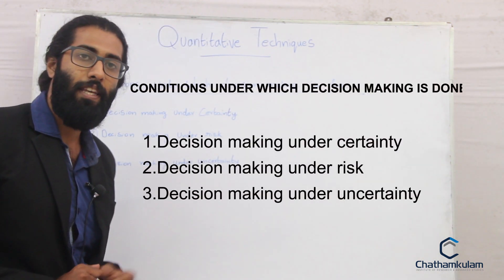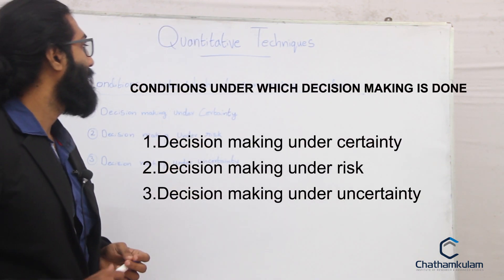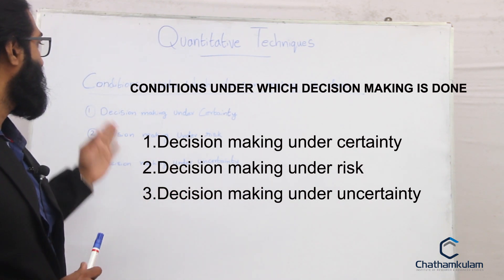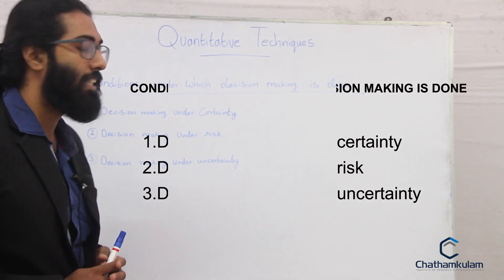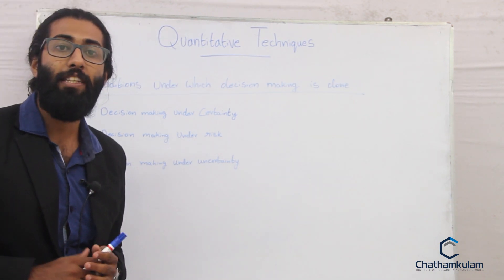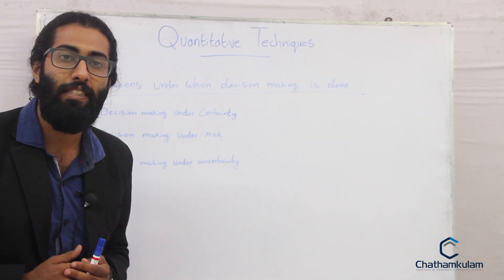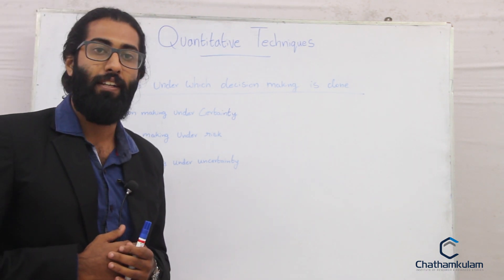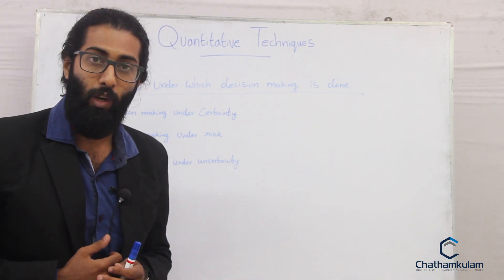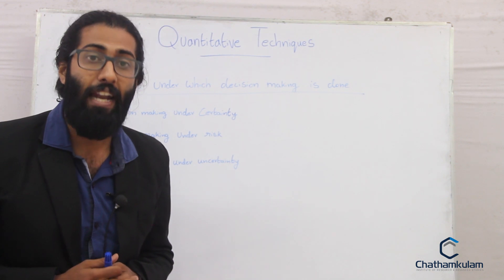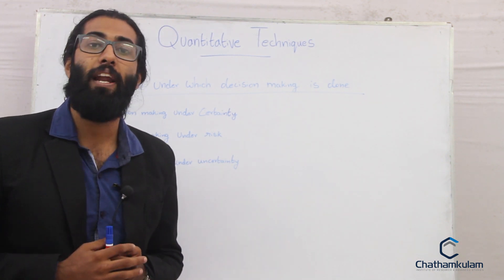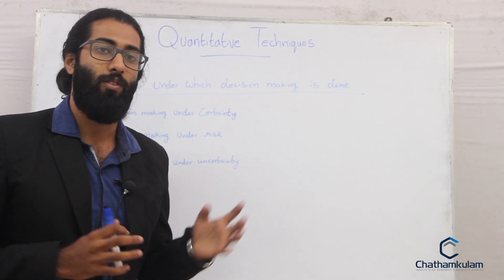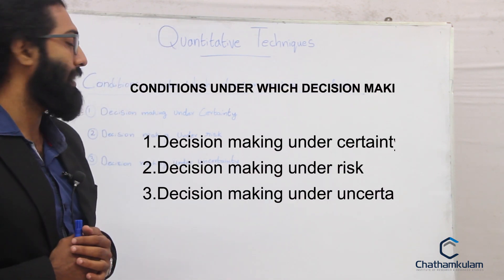Next we will see the conditions under which decision making is done. The first condition is decision making under certainty, where the manager makes the most accurate decisions as he is aware of the outcome of every action beforehand. This is one of the most desirable and ideal conditions, but in real life we don't find these kinds of situations quite often.